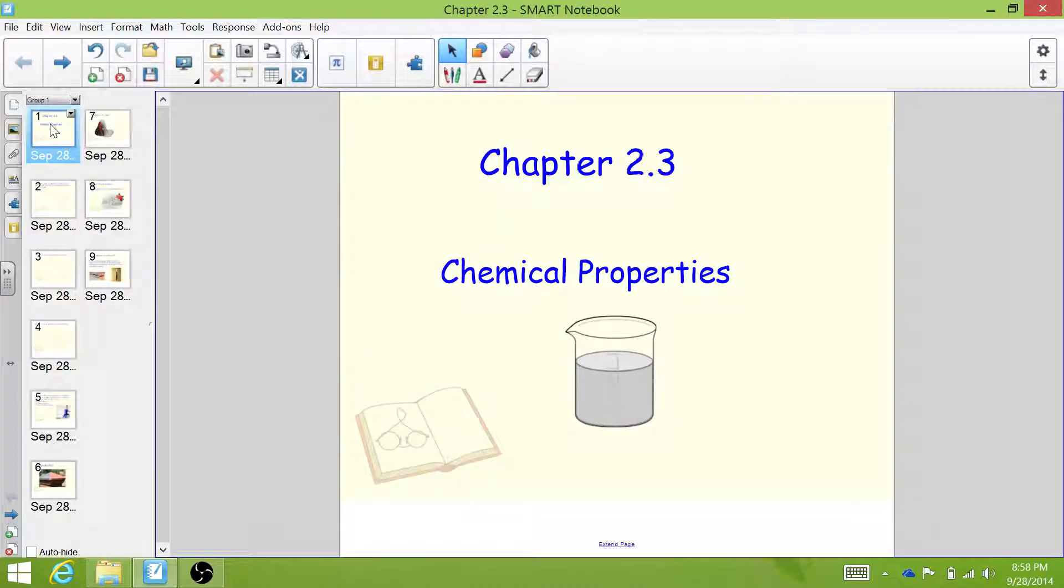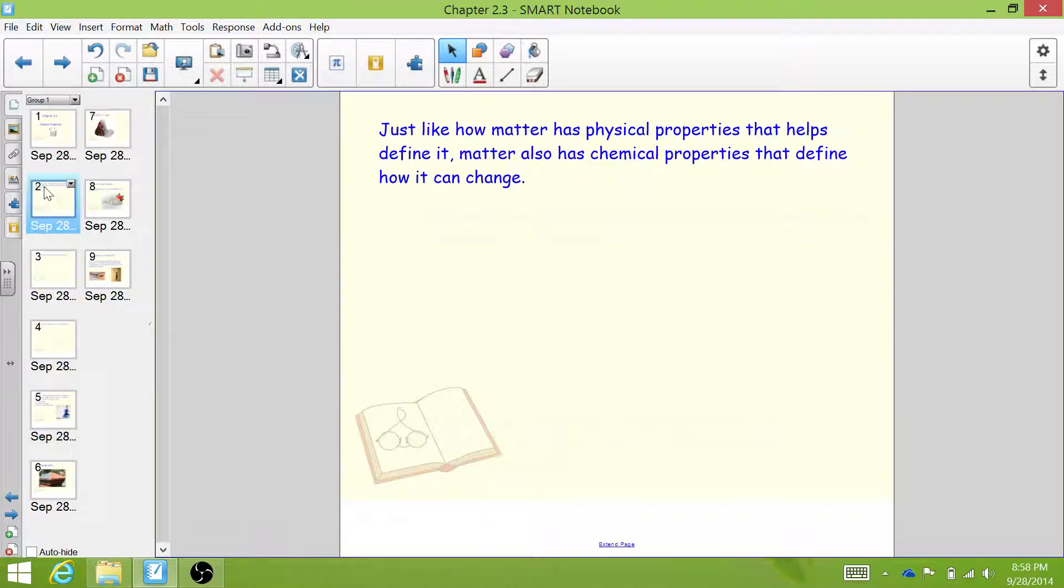All right, welcome to chapter 2.3 where we're going to talk about chemical properties and how they're different from physical properties. Just like how matter has physical properties that help define it, matter also has chemical properties that define how it can change and interact with the matter around it.